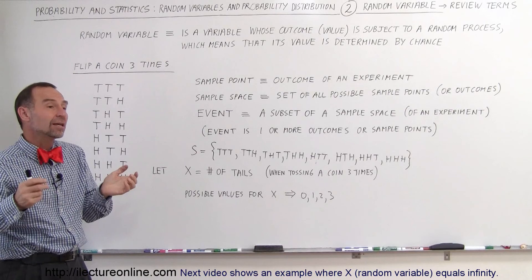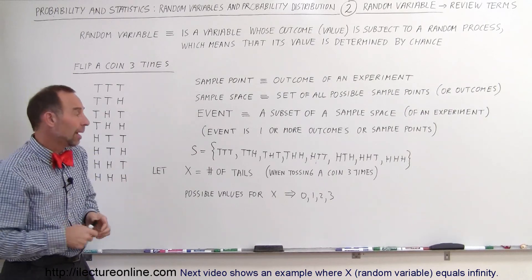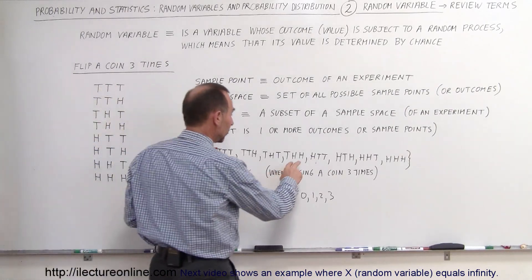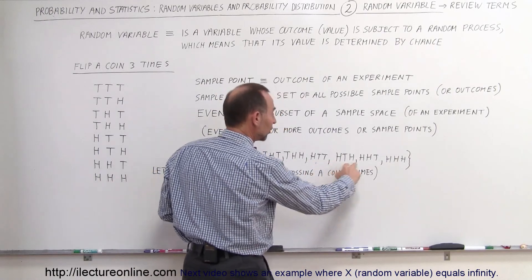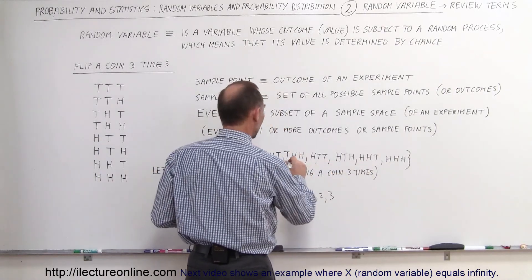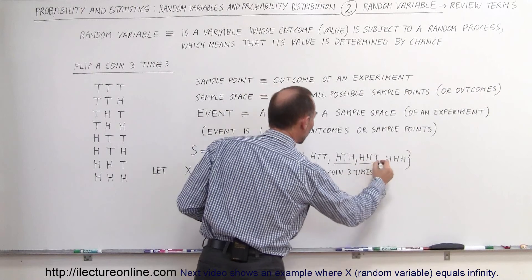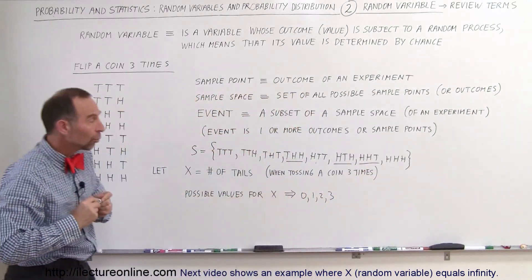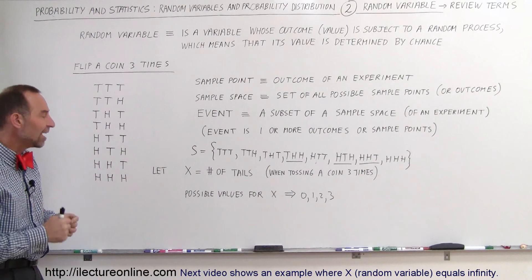In other words, the event could be that you get two heads and a tail. How many of those are there? Well, let's see. We have two heads and a tail here, two heads and a tail, two heads and a tail. So you can see there's one, two, three sample points which would then comprise that particular event.